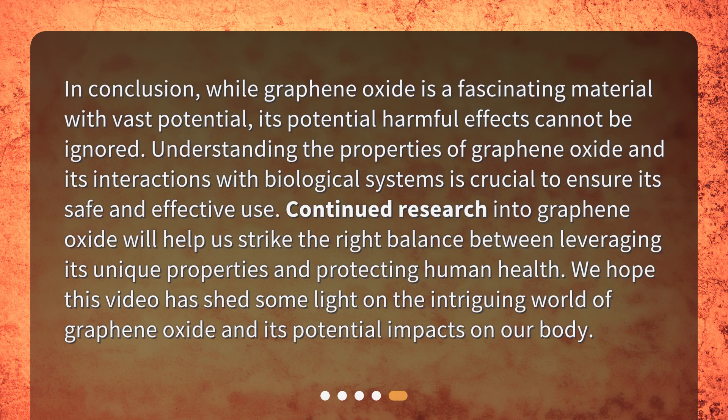In conclusion, while graphene oxide is a fascinating material with vast potential, its potential harmful effects cannot be ignored. Understanding the properties of graphene oxide and its interactions with biological systems is crucial to ensure its safe and effective use. Continued research into graphene oxide will help us strike the right balance between leveraging its unique properties and protecting human health. We hope this video has shed some light on the intriguing world of graphene oxide and its potential impacts on our body.